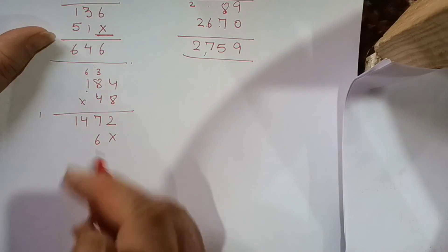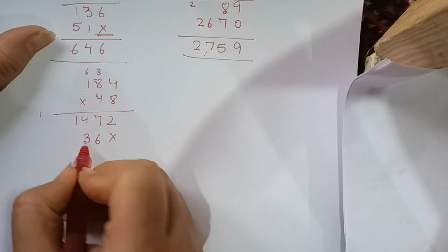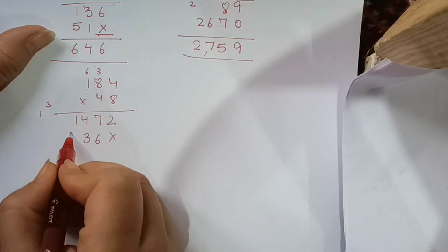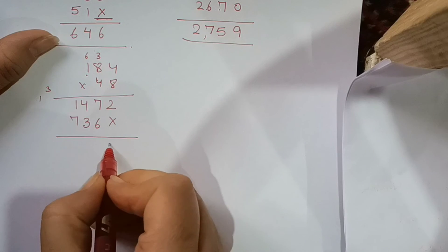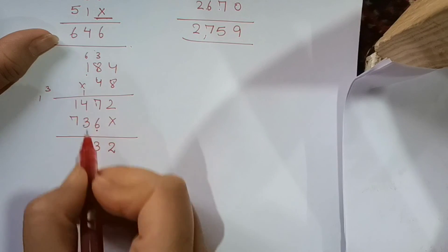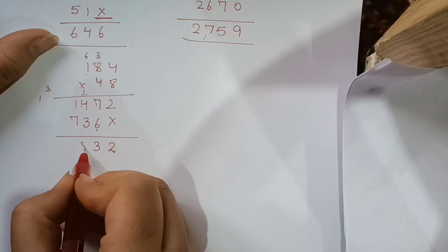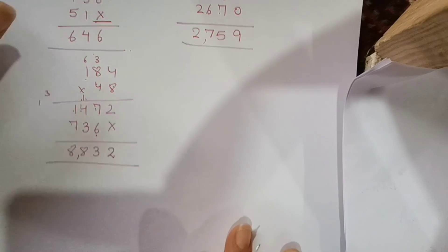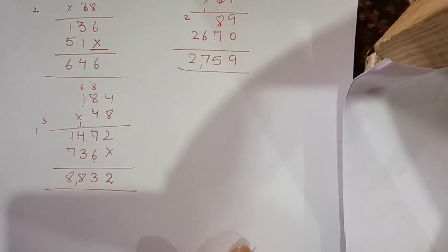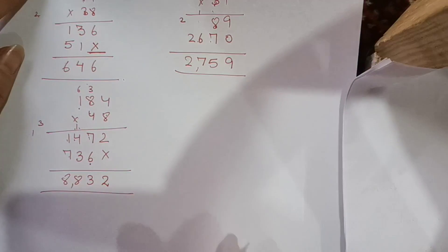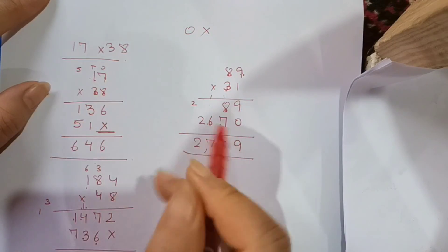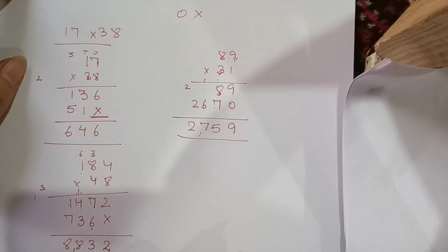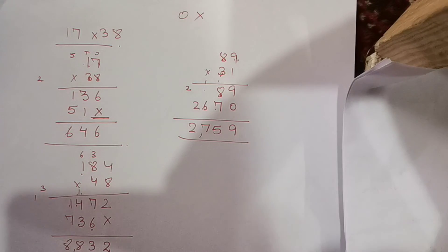This is the same way. 32 plus 1 is 33, 3 carry. 4 times 1 is 4 plus 3 is 7. So 8832. Take it to homework. Multiplication problems. I may have more questions which you have to complete. Use column method, multiply carefully. Next class we will check it. Take care of yourselves.